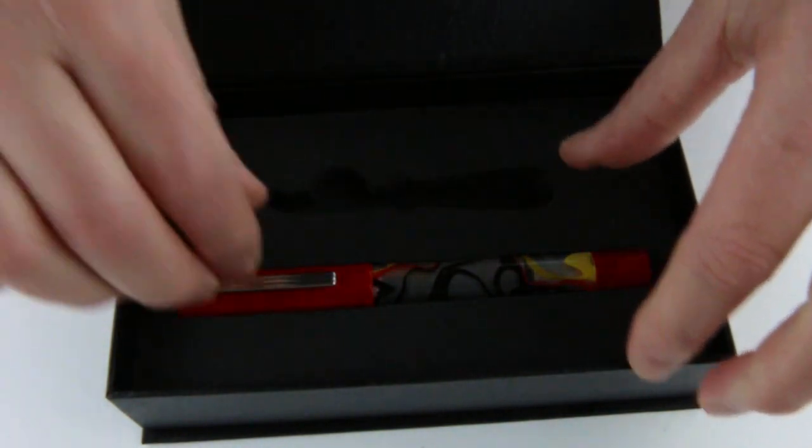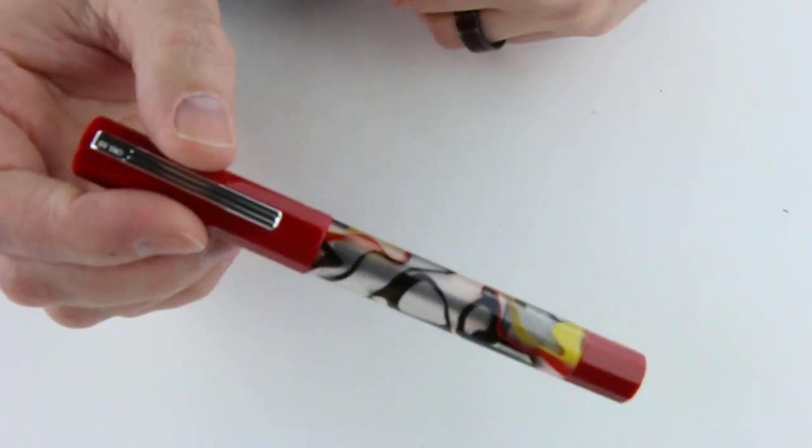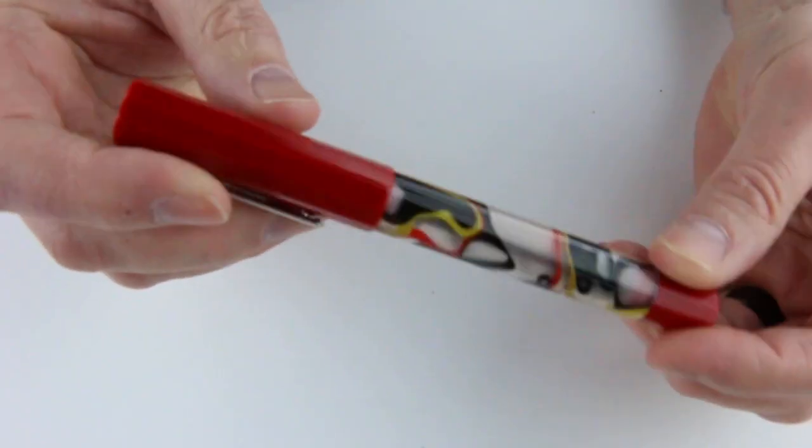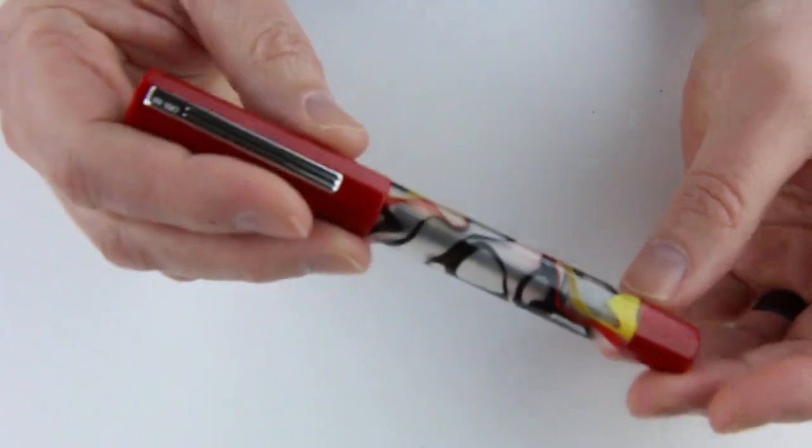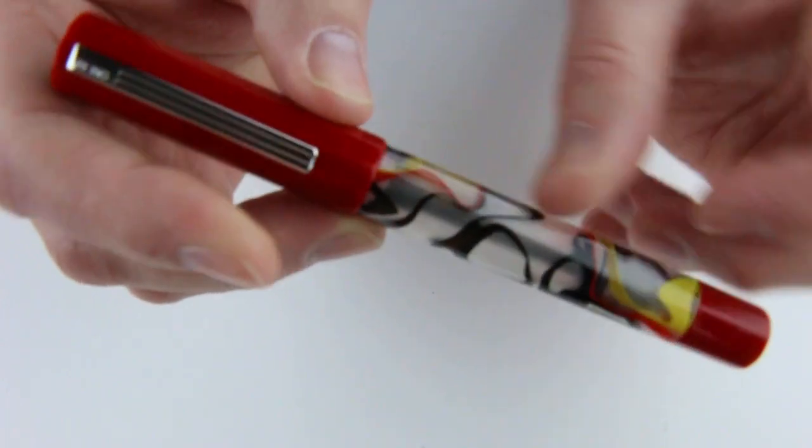And of course we have the Opus 88 Flow fountain pen. This happens to be the red version. They have different color resins with a clear barrel so you can see inside and see the ink levels.